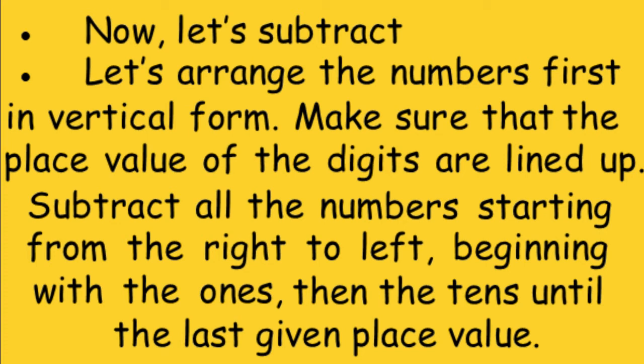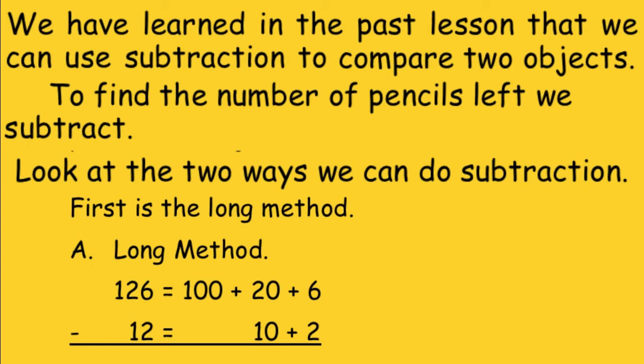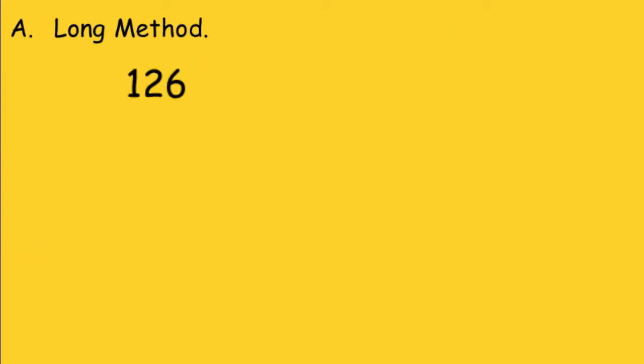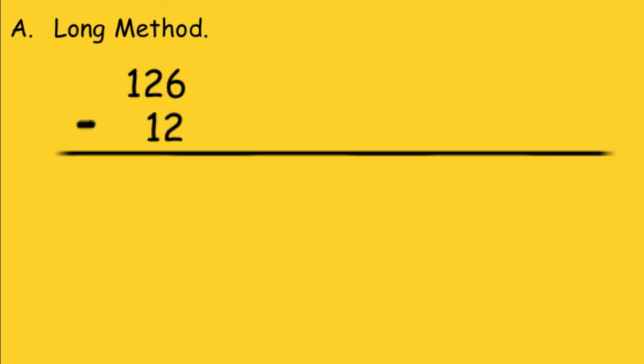Subtract all the numbers starting from the right to left, beginning with the ones, then the tens, until the last given place value. We have learned in the past lesson that we can use subtraction to compare two objects. To find the number of pencils left, we subtract. Look at the two ways we can do subtraction.